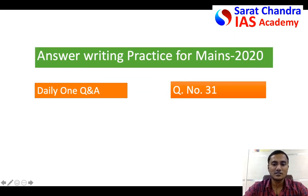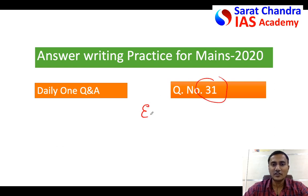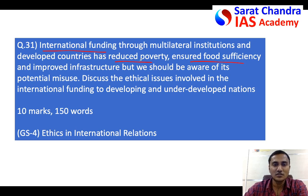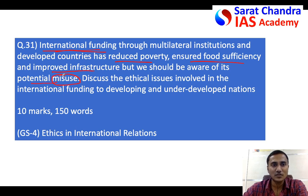Hi friends, today let us discuss the answer for question number 51. It is from General Studies Paper 4 - Ethics, specifically ethics in international relations. The question is regarding international funding: it is used to reduce poverty, malnutrition, and to improve infrastructure particularly in underdeveloped countries. However, there is a chance of potential misuse, so they are asking you to discuss various ethical issues involved in international funding.